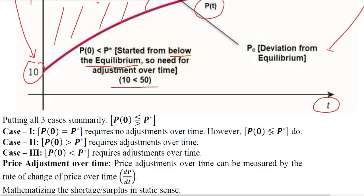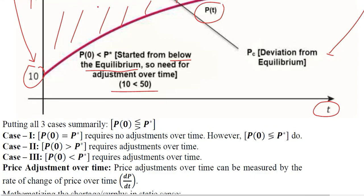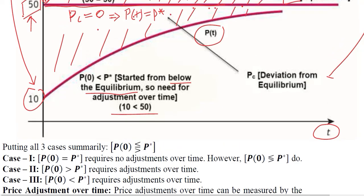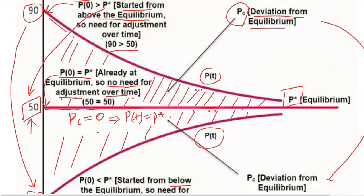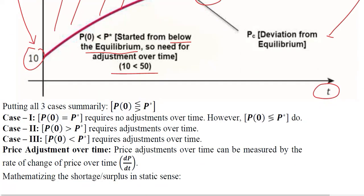Connecting from the last video, we developed the framework diagrammatically and saw how we can make sense of the dynamics of market price. We are trying to summarize these cases in one inequality where all three possibilities are merged: the initial price can be either less than, equal to, or greater than the equilibrium price. In the first case, where there is equality, we start from equilibrium and there is no need for adjustments.